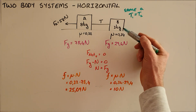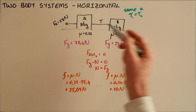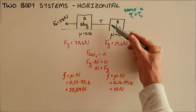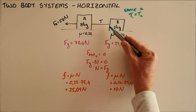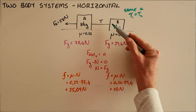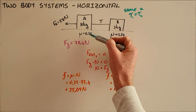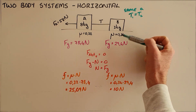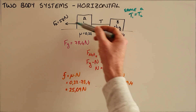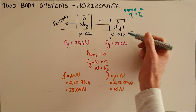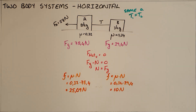Here we have two objects of different masses tied together by a string that does not stretch or go slack. Each of them has their own friction coefficient, and there is an applied force to the left of 58 Newtons on object A.